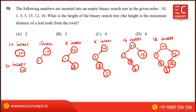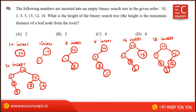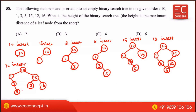The next step is to insert 16. 16 is greater than 10, go right to 15. 16 is greater than 15, so it is placed as the right child of 15. The height of the tree is the longest path from the root to a leaf node. The number of edges on the longest path is 1, 2, 3 — so 3 is the answer.